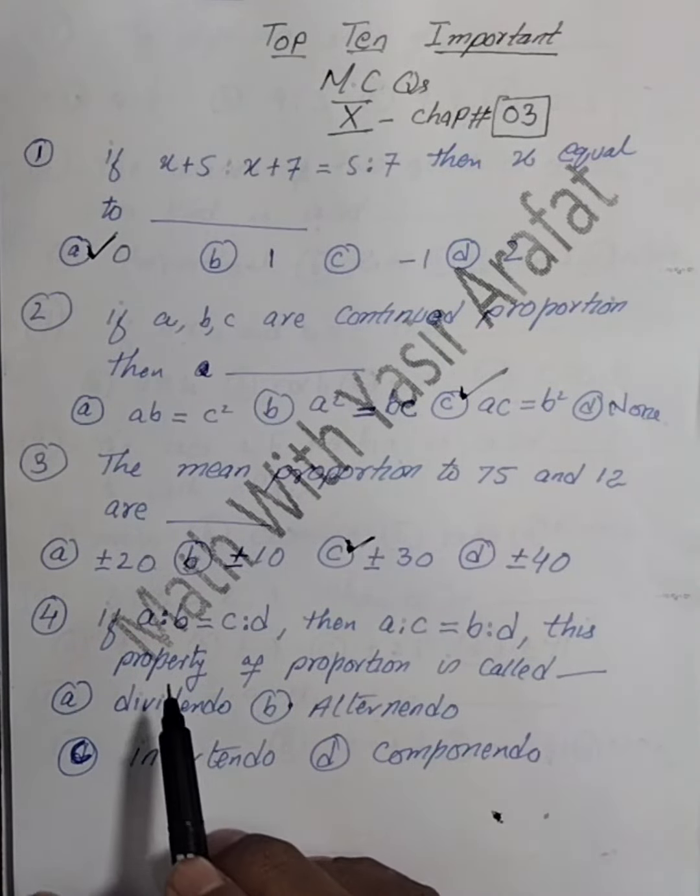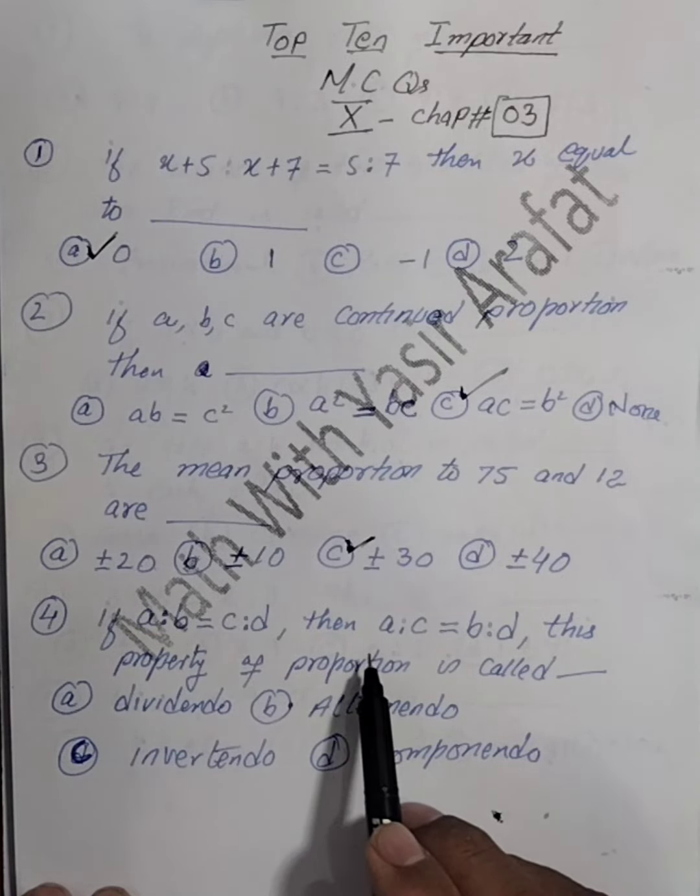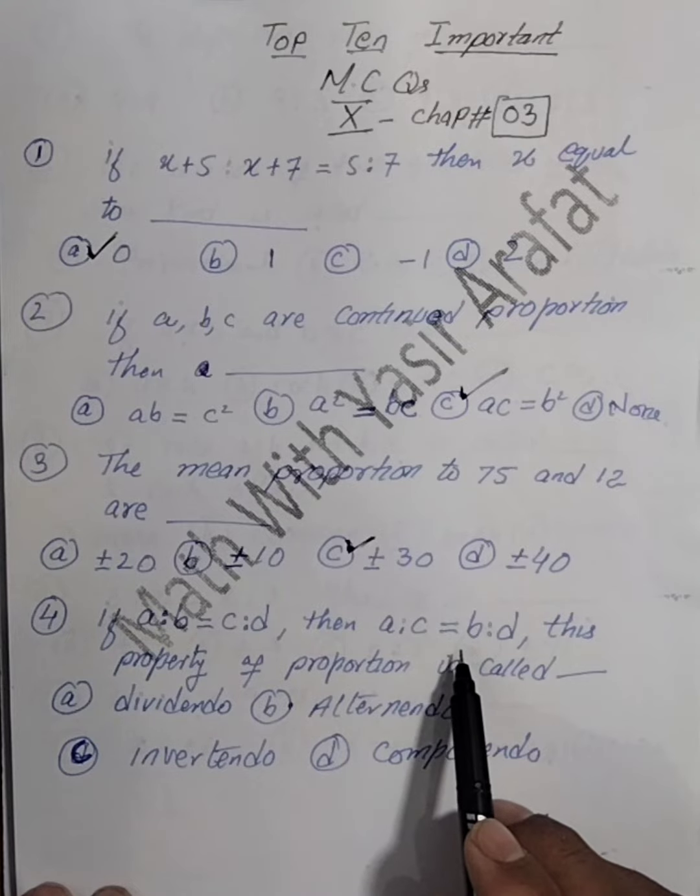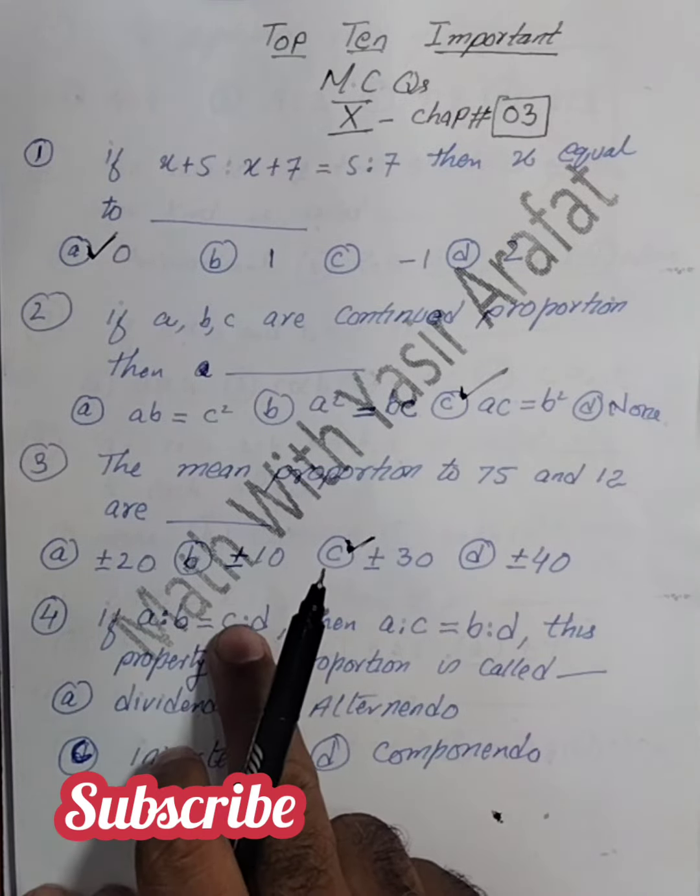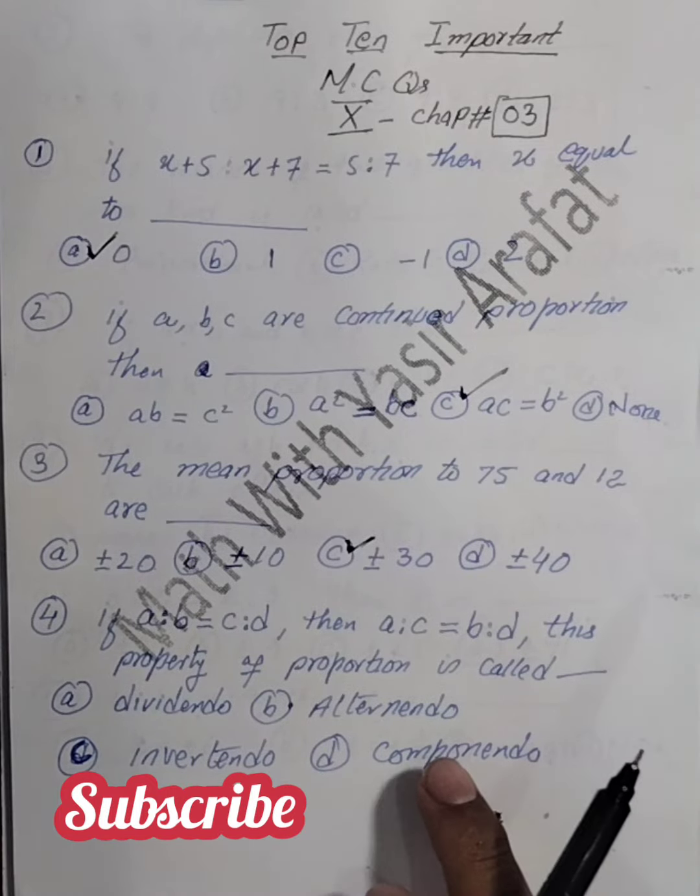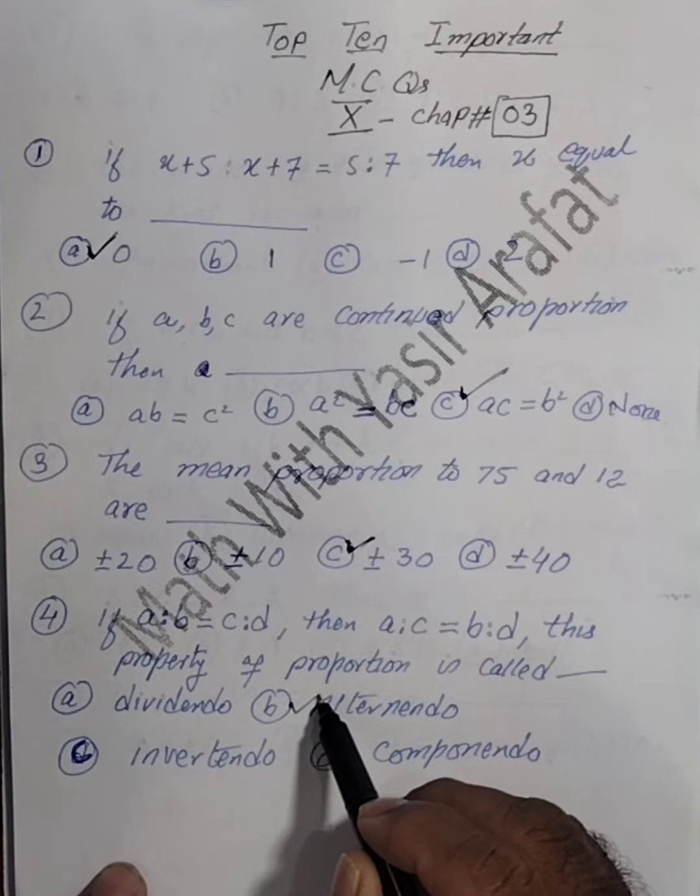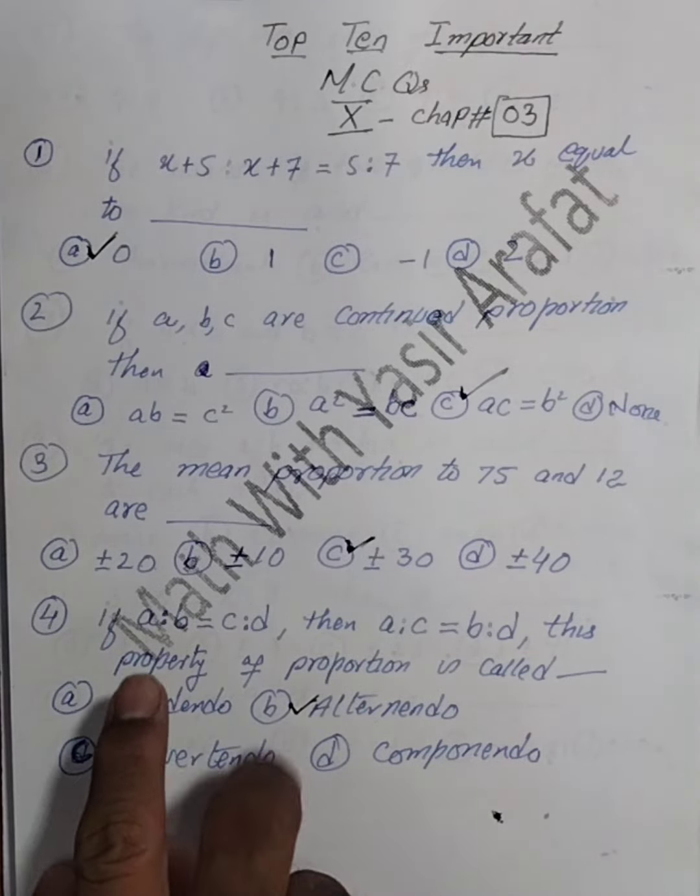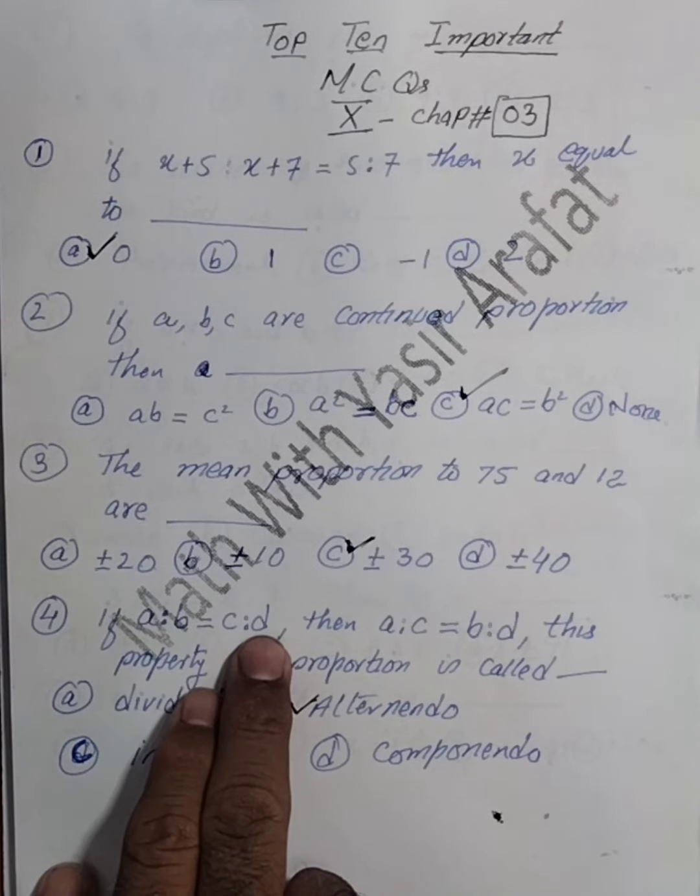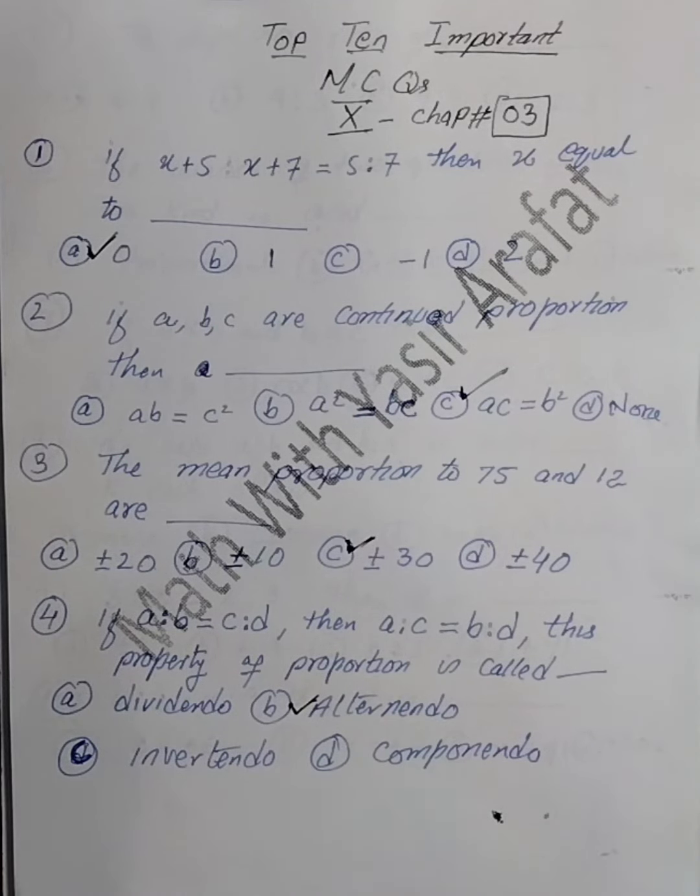Now here, if a ratio b equals c ratio d, then a ratio c equals b ratio d. So just we have to change their positions here. This type of property is called alternando. When we have to shift a with c and b with d, this property is called alternando.